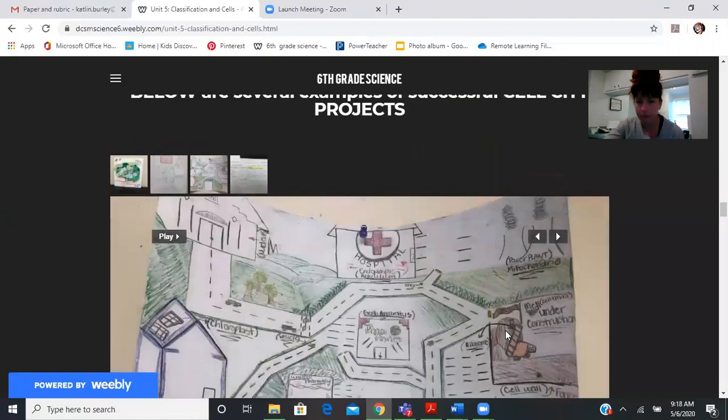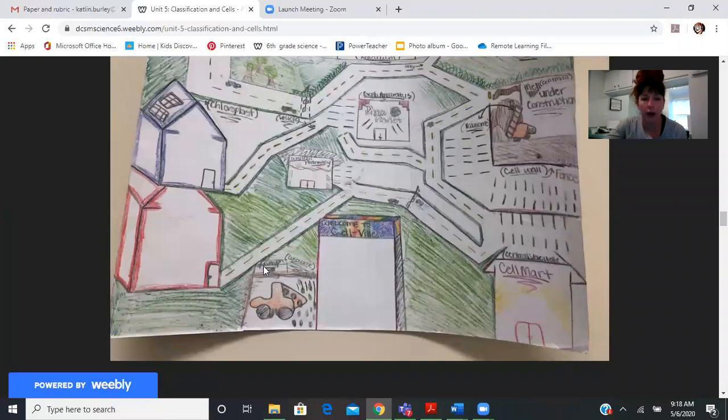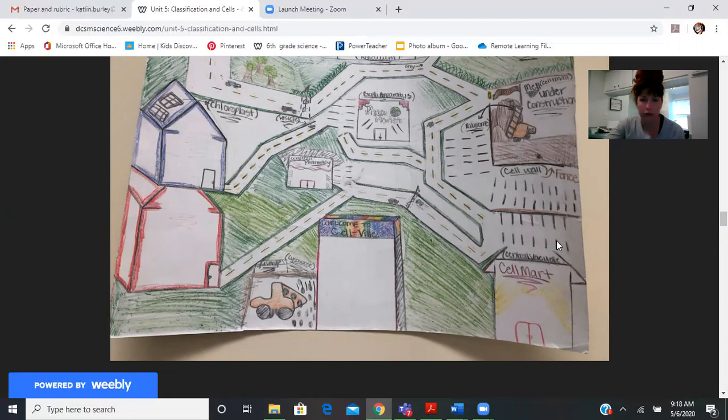Again, here is another great example. This person did a great job by saying like the dump is the lysosome, so you notice that the labels are together, very colorful, very clearly planned. The central vacuole is the cell marsh because it stores water and food.